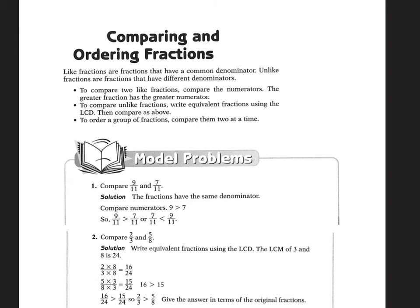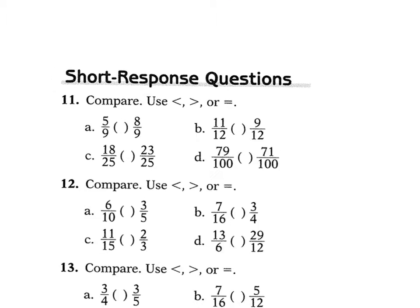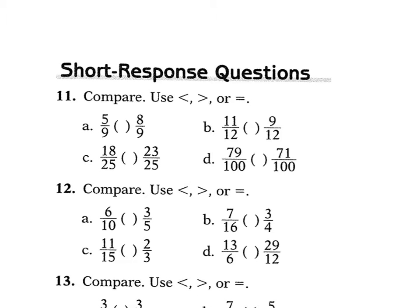Now comparing and ordering fractions. When comparing fractions with like denominators, look at the numerators — the larger numerator gives the larger fraction. For 11A, 5 ninths vs. 8 ninths: 8 is larger. For B, 11 twelfths vs. 9 twelfths: 11 twelfths is larger. For C, 18 over 25 vs. 23 over 25: 23 is larger. For D, 79 over 100 vs. 71 over 100: 79 over 100 is larger.